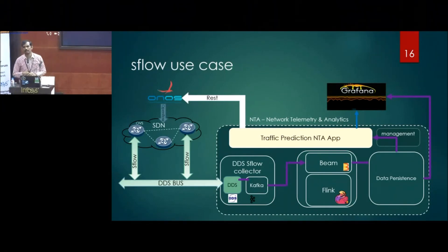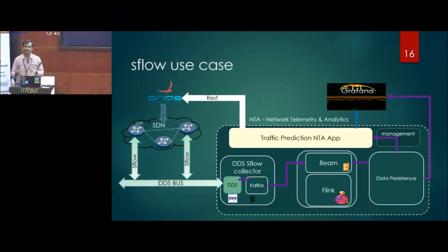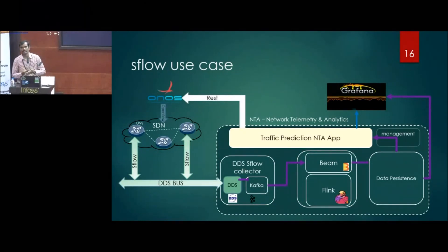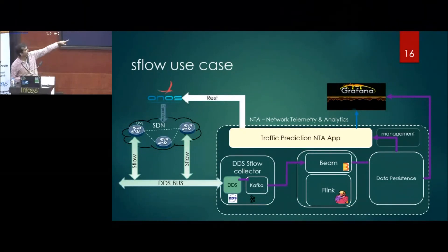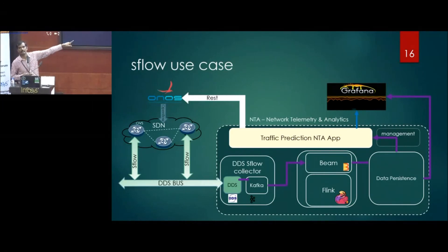The signaling was done through ONOS, so we could have path setup that is dynamic and real-time. Over-subscription is avoided, and it also had feedback from what is happening live, so it could also correct based on live conditions.